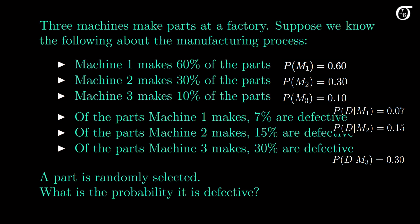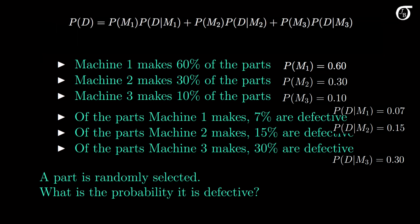We've been asked to find the probability the part is defective, and this is a classic case for the law of total probability. We have the conditional probabilities of a defective part for a set of mutually exclusive and exhaustive events. So the probability of defective is the probability machine 1 made the part times the probability the part is defective given it came from machine 1, plus the corresponding terms for machines 2 and 3. Filling in the values, the probability a randomly selected part is defective is 0.117.